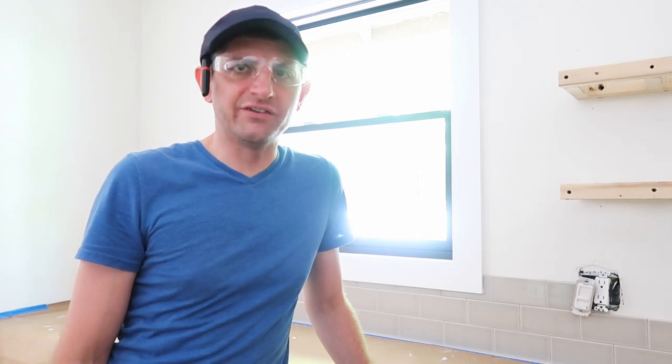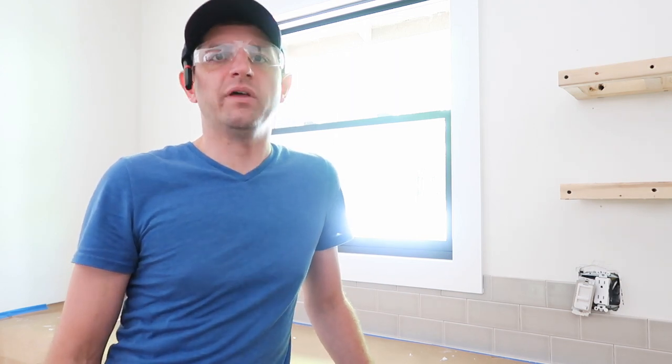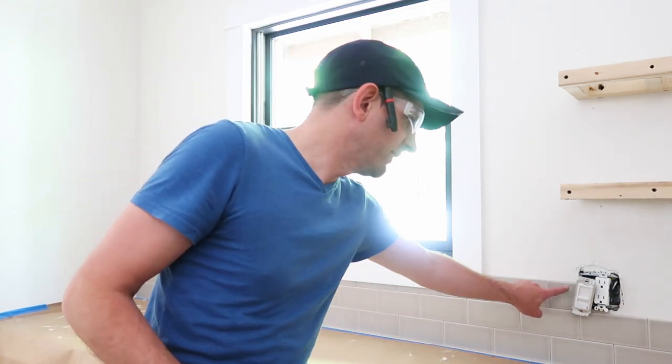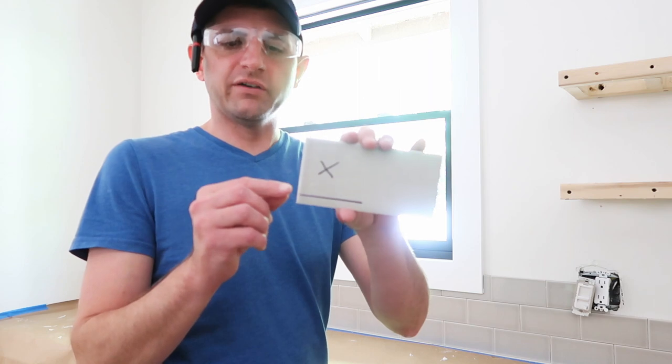When you get to the cuts around outlets, junction boxes, window ledges, things like that, you can end up with cuts where you need to make two cuts on one piece of tile.